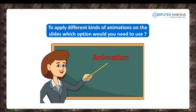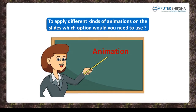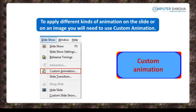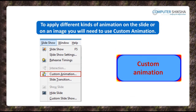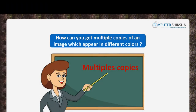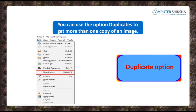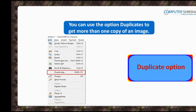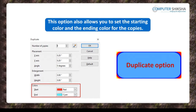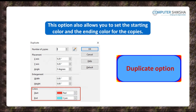To apply different kinds of animations on the slides, which options would you need to use? To apply different kinds of animations on the slide or on an image, you will need to use Custom Animation. How can you get multiple copies of an image which appears in different colors? You can use the option Duplicates to get more than one copy of an image. This option also allows you to set the starting color and the ending color for the copies.